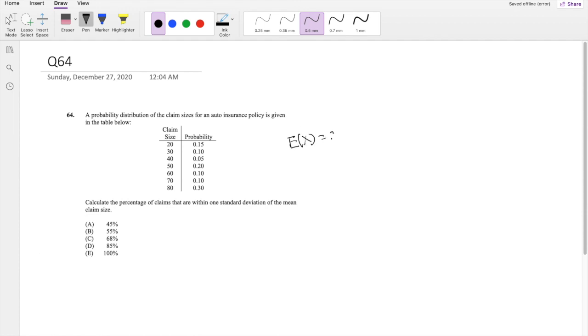So mean is quite easy. All you have to do is just 20 times the probability, plus 30 times the probability, and so on. 40 times 0.05, plus 50 times 0.2, plus 60 times 0.1, plus 70 times 0.1, and lastly, 80 times 0.3. So this is equal to 55.